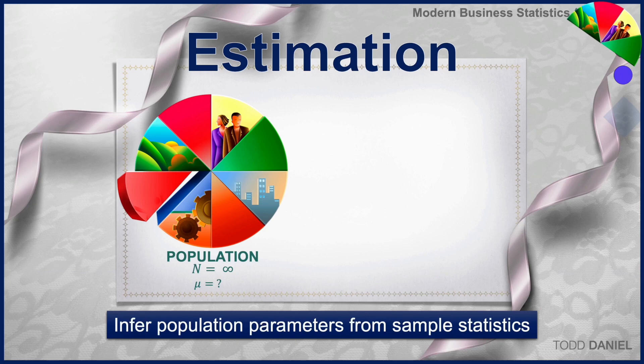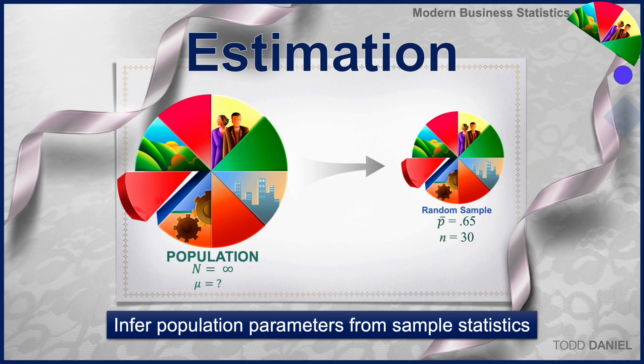We start with a population of infinite size and an unknown proportion value. And from that population, we draw a random sample of a given size. We determine from our random sample that the proportion in that sample is .65. We can then use the sample proportion as a point estimator for the population.